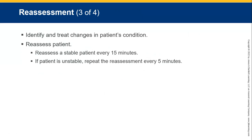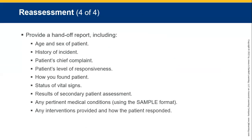Always when handing over, include: patient age and sex, history of the incident, chief complaint, patient's level of response, how you found the patient, initial vital signs, results of your secondary assessment, any pertinent medical conditions from the SAMPLE history, and any interventions or treatments provided — whether oxygen, CPR, or helping them use their metered-dose inhaler for asthma — and relay this back to EMS.